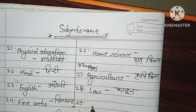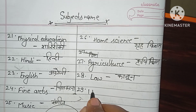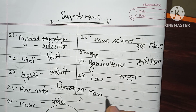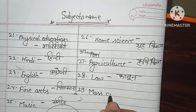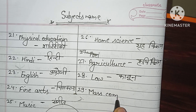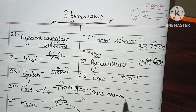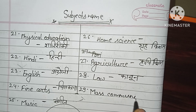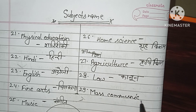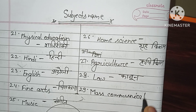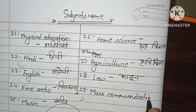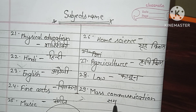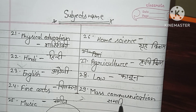Number 29, Mass Communication, M-A-S-S C-O-M-M-U-N-I-C-A-T-I-O-N. Mass Communication, Samajik Sanchar.